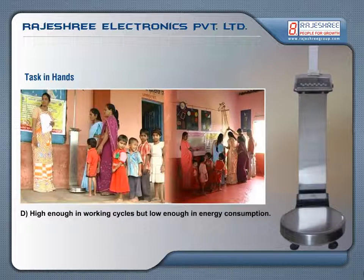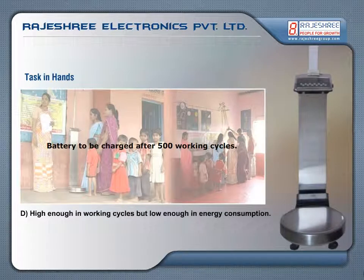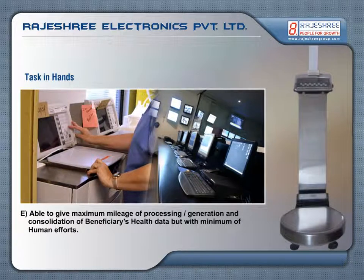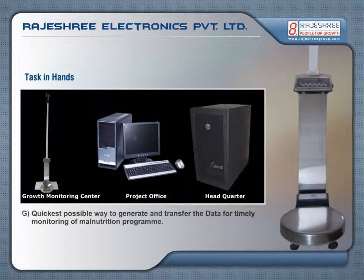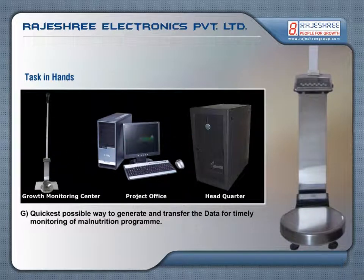The system should also be (d) high in working cycles but low in energy consumption, (e) able to give maximum mileage in processing, generation, and consolidation of beneficiaries' health data with minimum human effort, (f) ensure no scope for tampering and manipulation in generated data, and (g) provide the quickest possible way to generate and transfer data for timely monitoring of the malnutrition program.